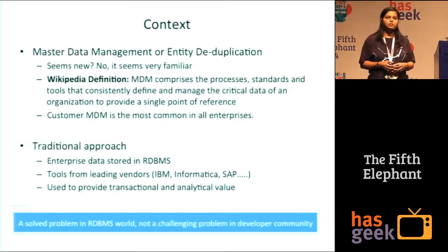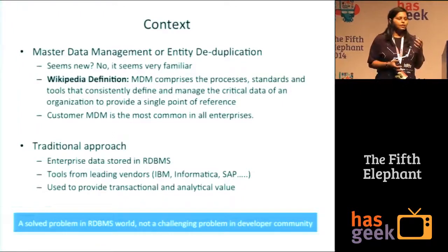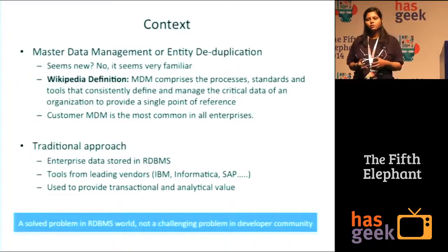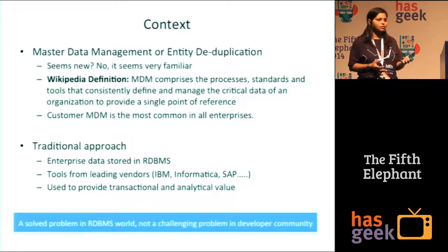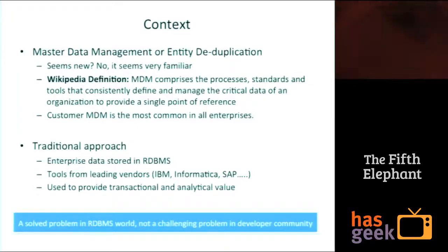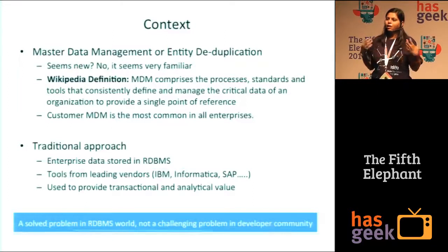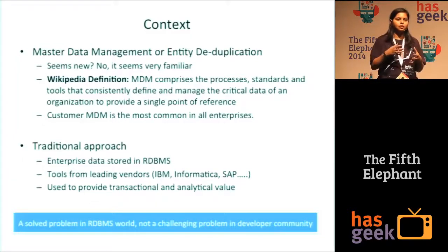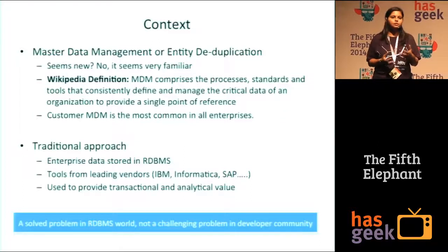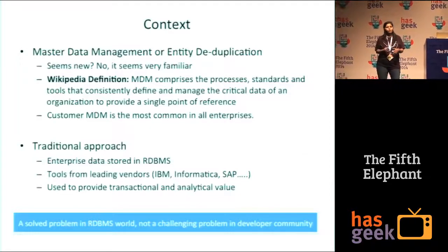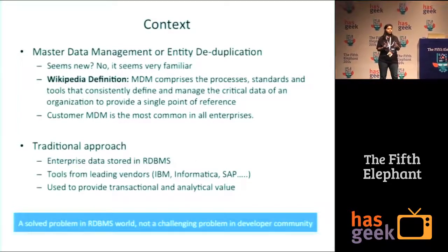We have all heard about master data management in organizations. It exists in some shape or form, and if I really have to define it in a very simple way, the data that is really critical for the organization — customer data, of course, but also product data or campaign data. Since the data is very critical and comes from various different sources, you would cleanse it, standardize it, normalize it, and find duplicates. Those duplicates may not be matches based on exact values or even close values — it could be from linkages.